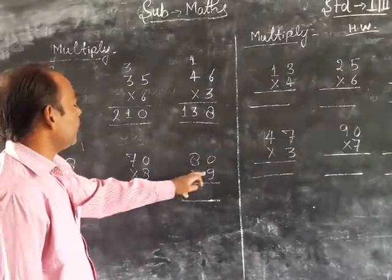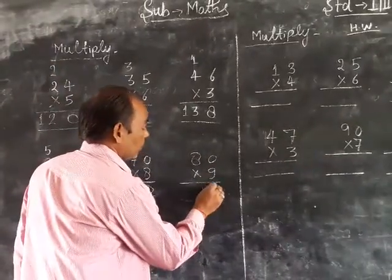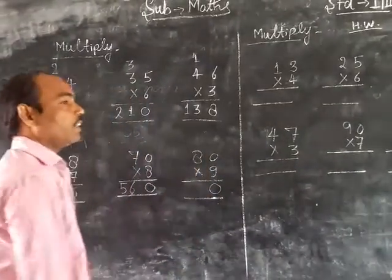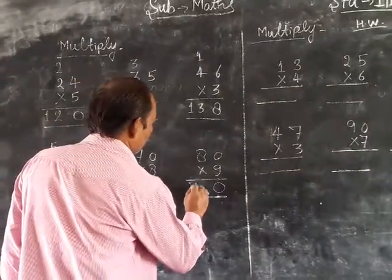Next, 80 x 9. 9 x 0 is 0. 9 x 8 is 72. Answer: 720.